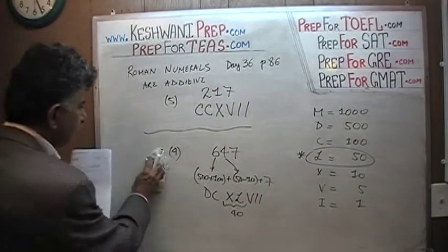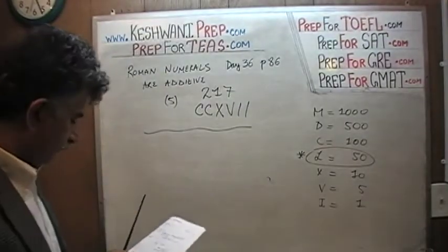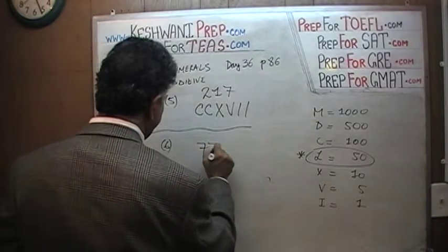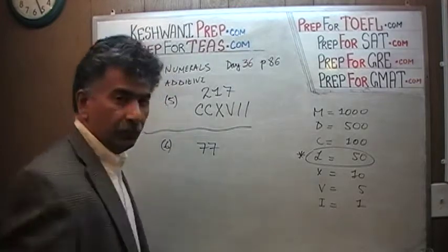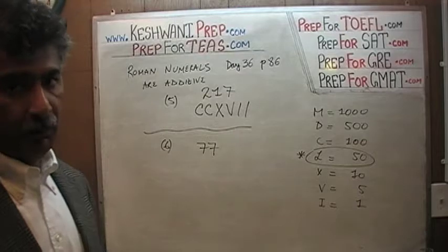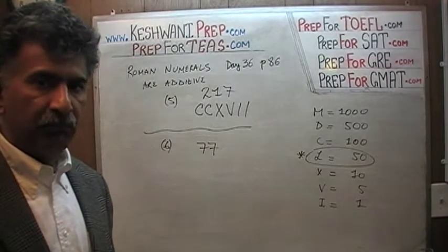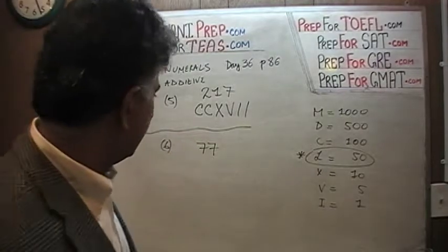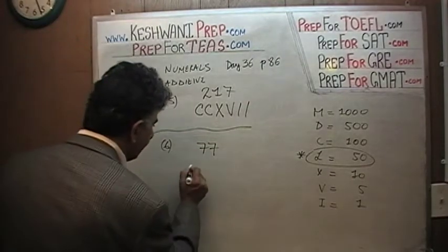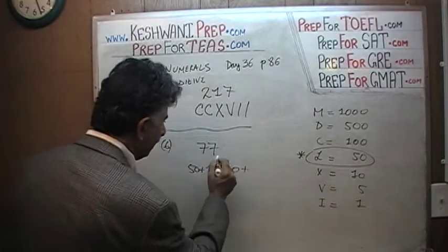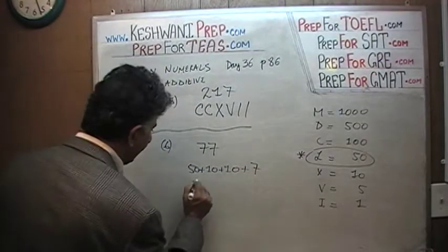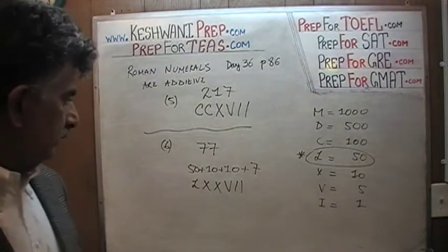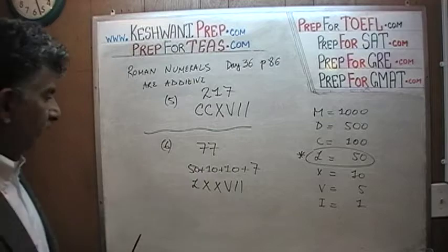Number six: can you write seventy-seven? Pause the video and do it yourself. The way the Romans wrote seventy-seven is awkward, very time consuming, very uneconomical — the entire number system is very cumbersome. Seventy would be written as fifty plus ten plus ten — that's your seventy. And then seven. So: L, X, X for seventy, and then VII for seven. That's how you write seventy-seven.